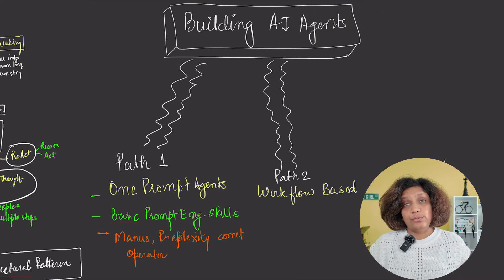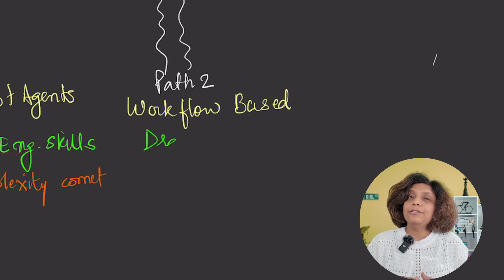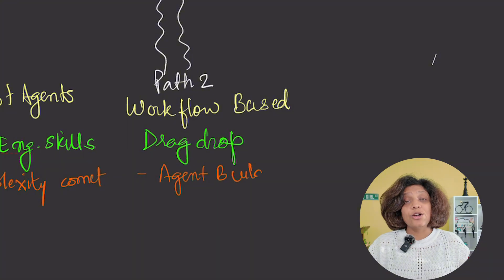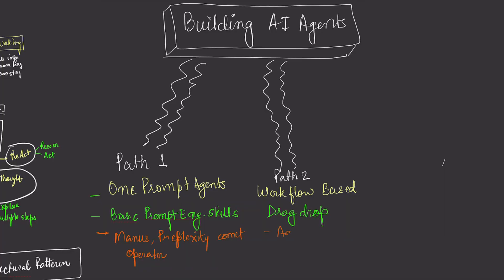Path two is workflow-based agents. These platforms offer visual drag-and-drop interfaces for building agent workflows with minimal coding. These are perfect for automating business processes, customer service triage, data entry, report generation, scheduling workflows. Tools like N8N, Make, Diffy, and Langform give you the power to build sophisticated agents without being a developer.